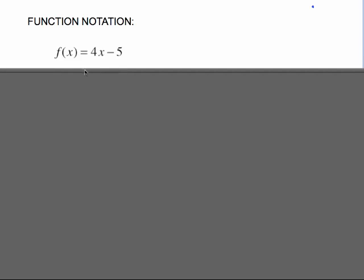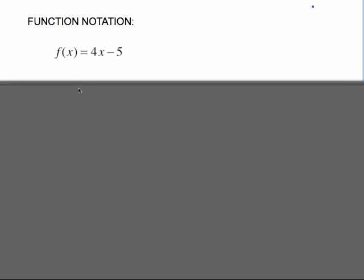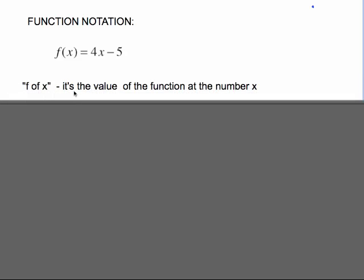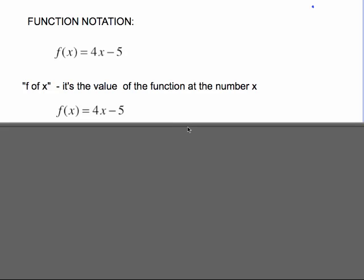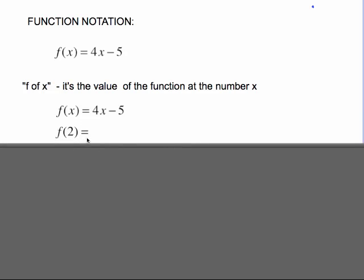This last part of the video will go over what is known as function notation. Take a look at this. This stands for f of x equals 4x minus 5. This is function notation. This little f with the parentheses and the x. And that is translated, as I said, f of x. And what it stands for is it's the value of the function at the number x. So take f of x equals 4x minus 5, and I want to know what f of 2 is. That means I'm looking for the value of the function at the number 2. All I have to do is plug 2 in for x and do the arithmetic. 4 times 2 is 8 minus 5 is 3. So the function value at 2 is 3. That could be thought of as the ordered pair 2 comma 3. You could think of the 2 being the input on my function machine and the 3 being the output.